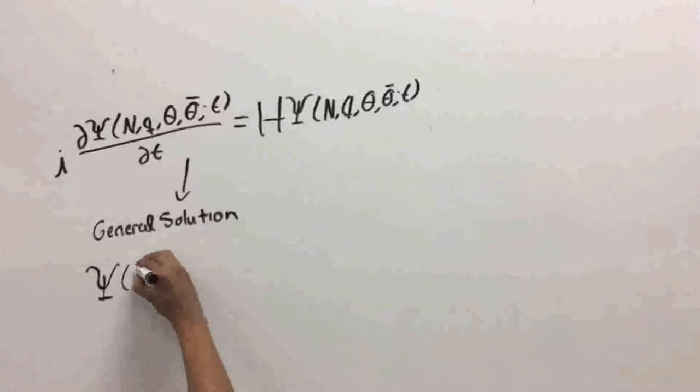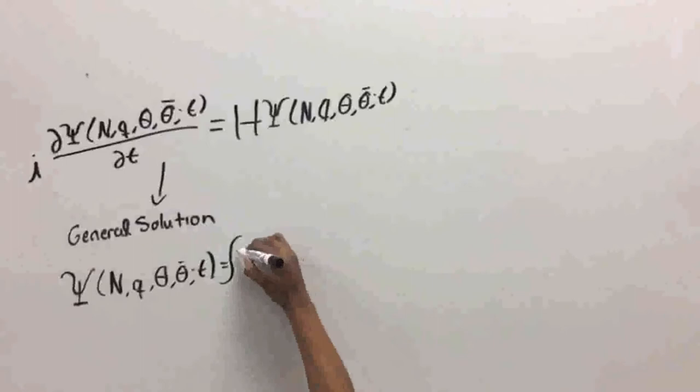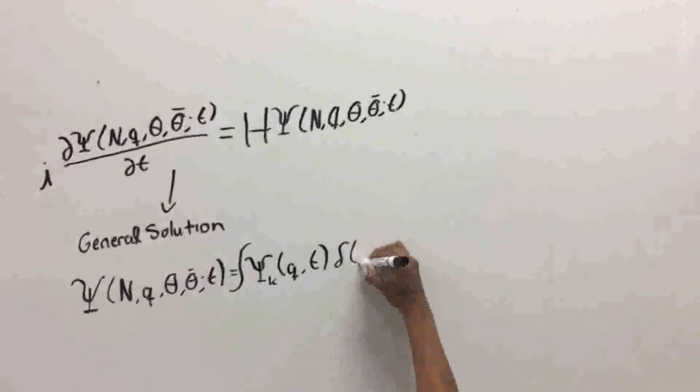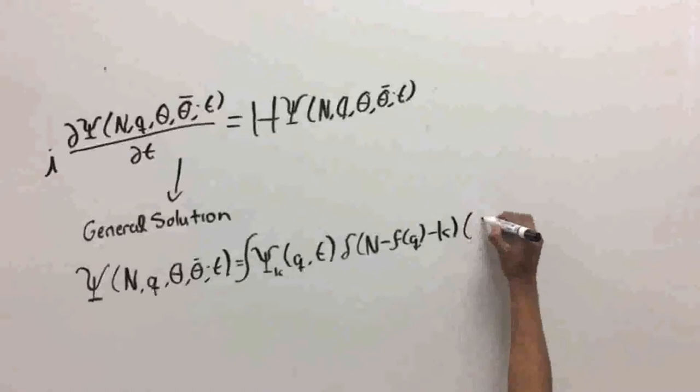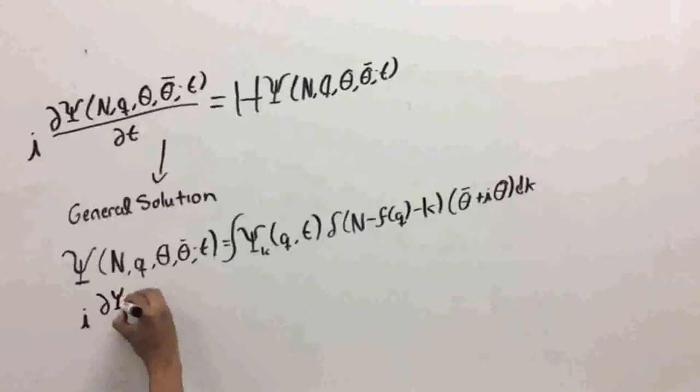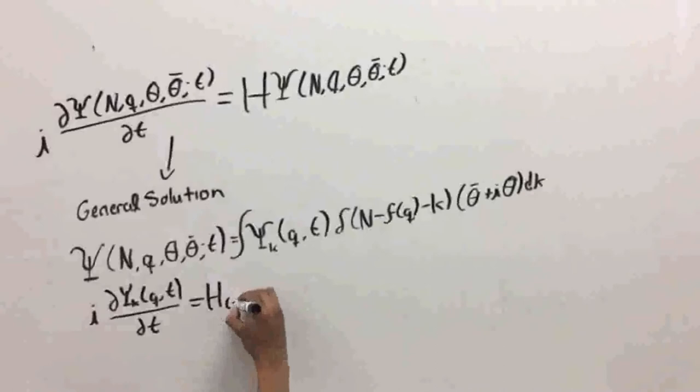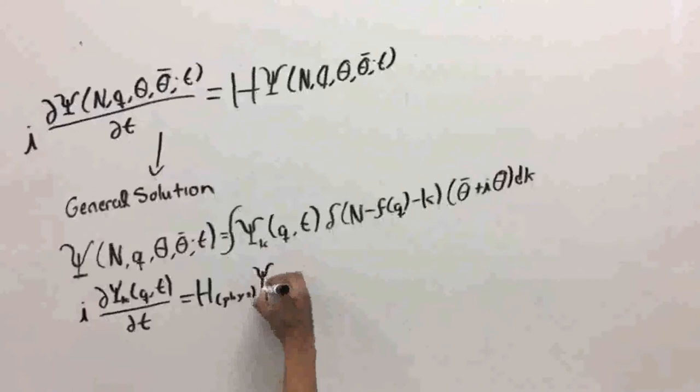From this form of the Schrodinger equation, this general solution is obtained. The wave function of n, q, theta, theta-daggered, and t is equal to the integral of the wave function phi-k of q and t multiplied by the delta function of n minus function of q minus k multiplied by theta-daggered plus i multiplied by theta dk. The phi-k function describes the state of the physical subsystem for a fixed reference frame, and it is a solution to i multiplied by the partial derivative of phi-k of q-t with respect to t equals H-phys multiplied by the wave function k of q and t.